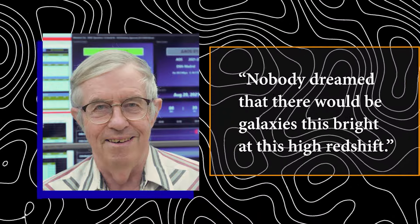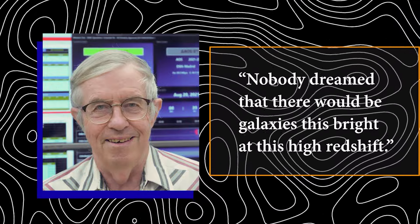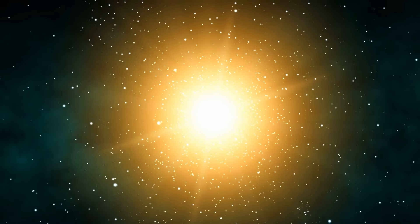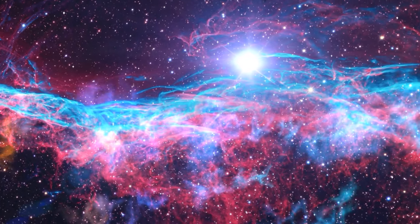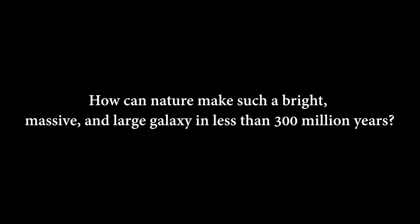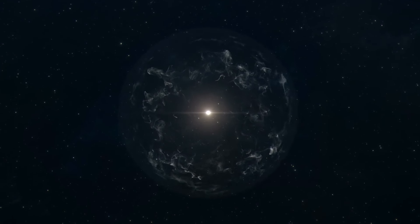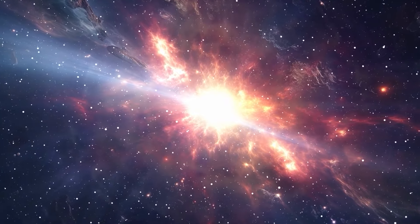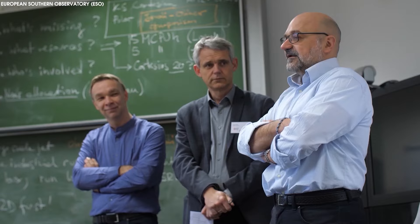Webb measures the galaxy to be more than 1,600 light years across, some five times more luminous than that prior most distant galaxy. Nobody dreamed that there would be galaxies this bright at this high redshift. According to NASA, the light we see is coming mostly from young stars and not from emission near a growing supermassive black hole. This much starlight implies that the galaxy is several hundreds of millions of times the mass of the sun. This raises the question: how can nature make such a bright, massive, and large galaxy in less than 300 million years?